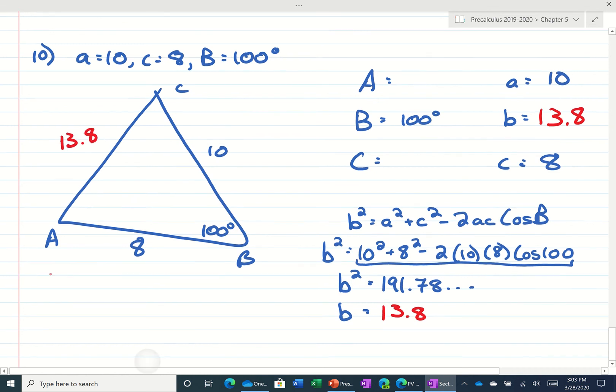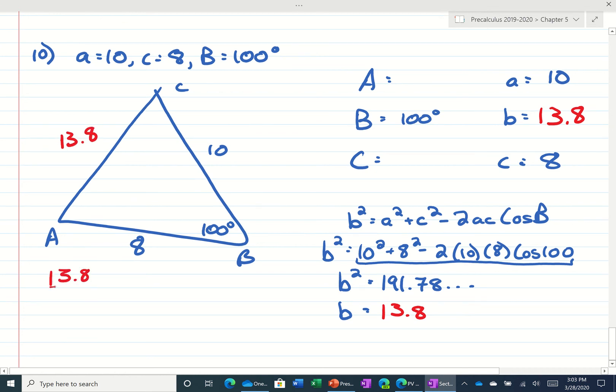So now that I have that side, I can make a law of sines fraction with 13.8 over the sine of 100 is equal to 10 over the sine of A. And if I don't get the largest side opposite the largest angle or smallest side opposite the smallest angle, instead of finding angle A, I would find angle C instead and see if that gives me a good answer.